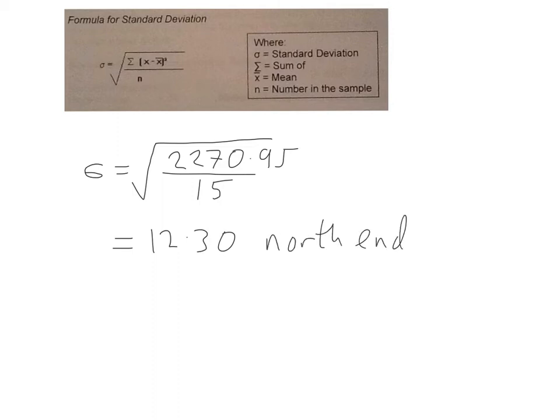Now the south end of the beach is bigger. It calculates as 22.88. So the standard deviation is much greater at the south end than the north end.